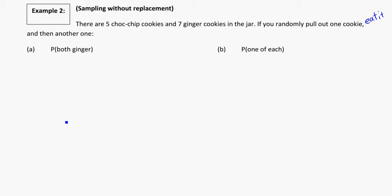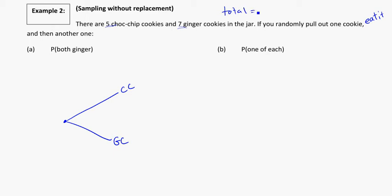Let's think about the probability tree. At the beginning I have a choice of chocolate chip and a choice of a ginger cookie. I've got five chocolate chip cookies and seven ginger cookies, so a total of twelve. That gives me a five out of twelve chance of getting a chocolate chip as my first cookie, and a seven out of twelve chance of getting a ginger cookie for my first one.